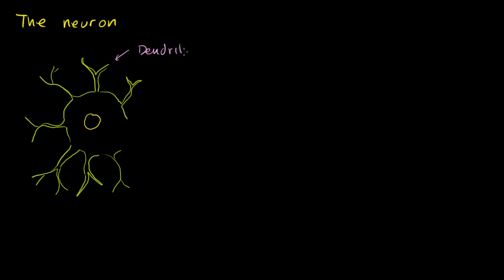And these tend to be, and nothing is always the case in biology, sometimes different parts of different cells perform other functions. But these tend to be where the neuron receives its signal. And we'll talk more about what it means to receive and transmit a signal in this video and probably in the next few. So this is where it receives the signal.